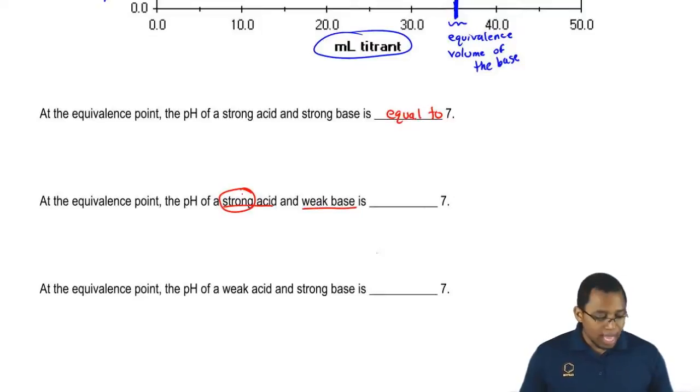Anytime you're titrating a weak acid and a strong base together, at the equivalence point, the pH is going to be less than 7. It's going to be acidic. It's acidic because the acid is stronger. Whoever is stronger will tell us what kind of solution we have.